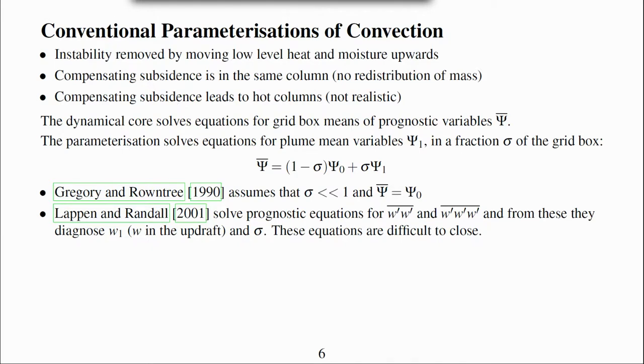Lappen and Randall overcome this limitation by solving prognostic variables for the double and triple correlations of vertical velocity anomalies. From these they diagnose w₁, that's w in the updraft, and σ. This leads to a consistent set of equations that includes mass transport by convection but the equations for the double and triple correlations are difficult to close and therefore the results may not be reliable.